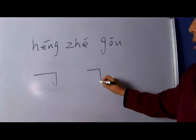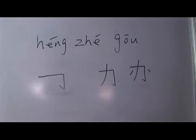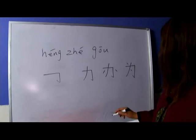So another character: heng, zhe, go, in a character like ban, and in a character like a way. And so heng, zhe, go — heng, zhe, go. So three.